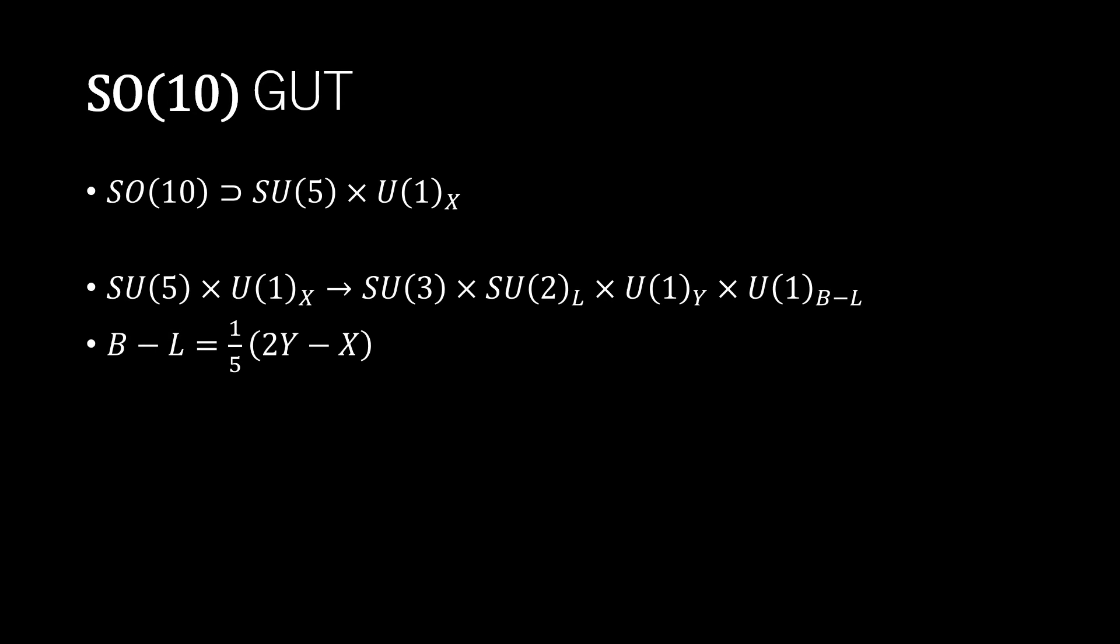This X-charge is determined to cancel the anomaly. When the GUT is broken, the X-charge mixes with one of the SU(5) generators corresponding to the weak hypercharge, resulting in the difference between the baryon and lepton numbers, B-L.